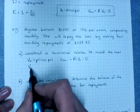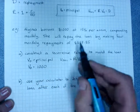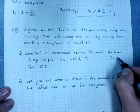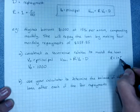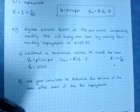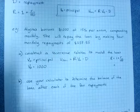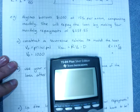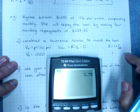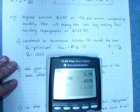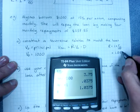V₀ is the principal of $1,000 and we need to calculate R. R is 1 plus the interest rate per compounding period over a hundred. It's 15% per annum — we'll need to divide that by four to get quarterly, then divide by a hundred and add one. So R is 1.0375.